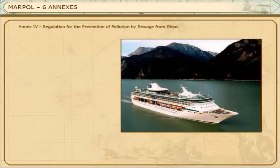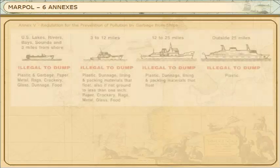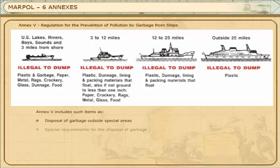Annex 4: Regulation for the Prevention of Pollution by Sewage from Ships. Annex 4 includes such items as Surveys, the Form and Duration of Certificate, Discharge of Sewage, and Standard Discharge Connection. Annex 5: Regulation for the Prevention of Pollution by Garbage from Ships. Annex 5 includes such items as The Disposal of Garbage Outside Special Areas, Special Requirements for the Disposal of Garbage, The Disposal of Garbage Within Special Areas, and Port State Control on Operational Requirements.